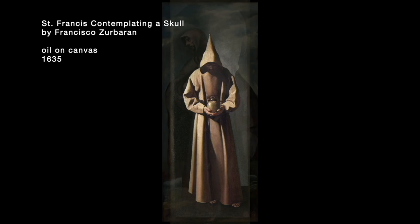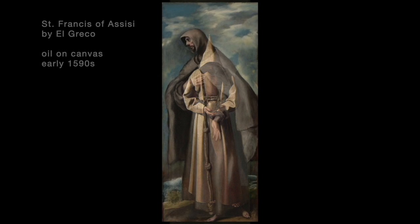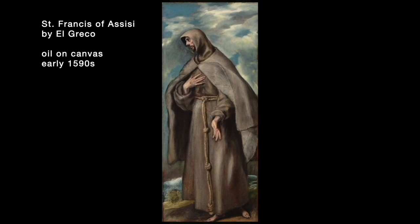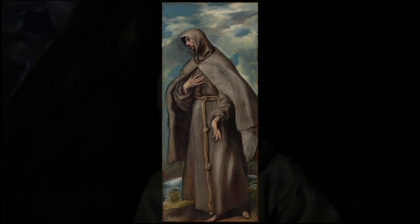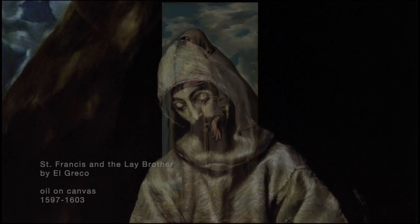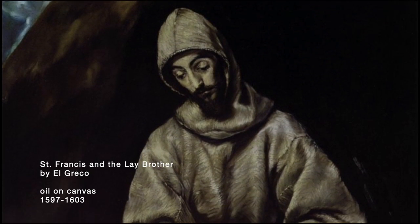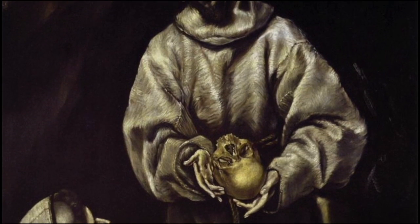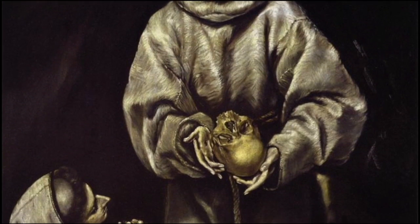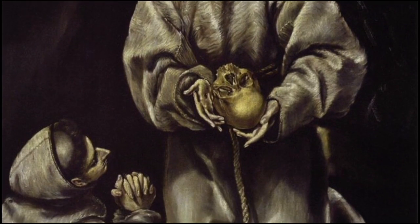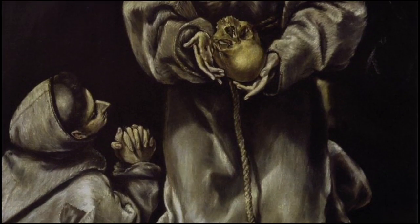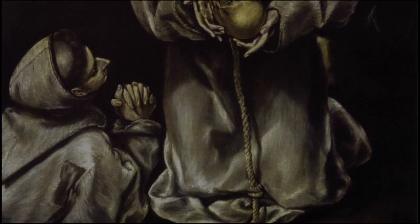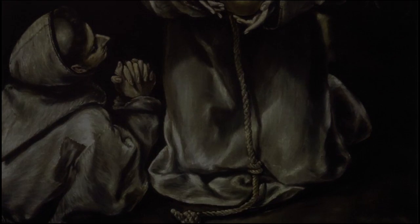Zurbaran was a master of the single monumental figure. In his native Greece, El Greco created Byzantine icons. After moving to Italy and then Spain, he infused his style with mannerism and the artistic environment of that time and place. The result is a unique expressionist style that does not belong to any conventional school. El Greco contributed in a major way to the iconography of the Counter-Reformation.